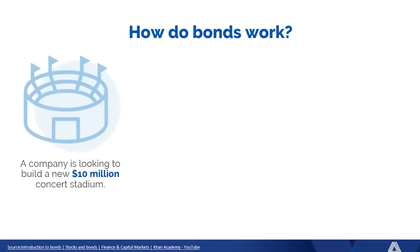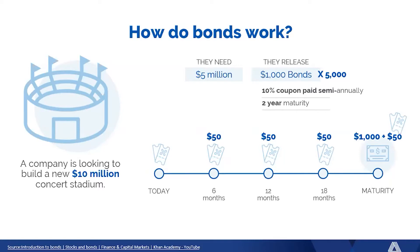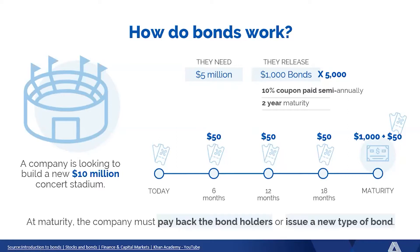So how do bonds work? A company wants to build a new $10,000 concert stadium and needs to raise $5 million. They issue 5,000 bonds at $1,000 each. Bonds come with a coupon, usually paid semi-annually. In this two-year maturity example, you receive a $50 coupon at the six-month mark, another $50 at twelve months, another $50 at eighteen months, and at the end of two years at maturity you get back your $1,000 plus a final $50 coupon. At maturity, the company must pay back bondholders or issue a new bond.